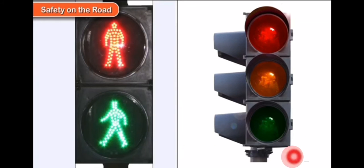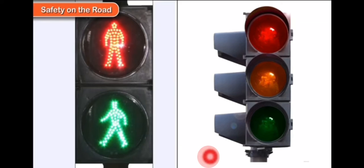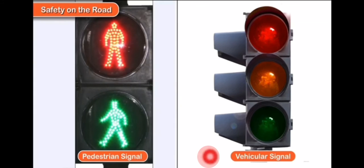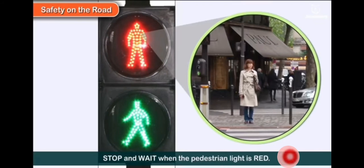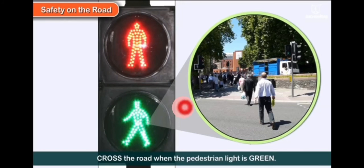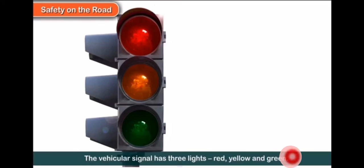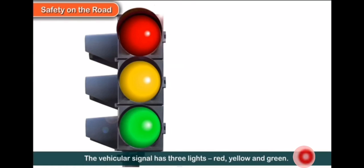Have you ever seen these symbols before? This is called a pedestrian signal and this is called a vehicular signal. The pedestrian signal has two lights: red and green. Stop and wait when the pedestrian signal is red; cross the road when the pedestrian light is green. Even if there is a zebra crossing, you need to use the pedestrian signal. The vehicular signal has three lights: red, yellow, and green.